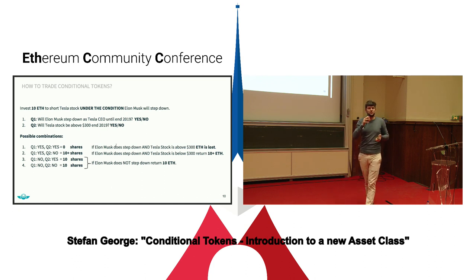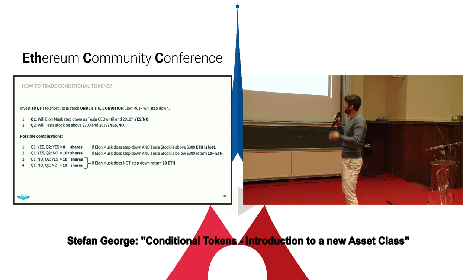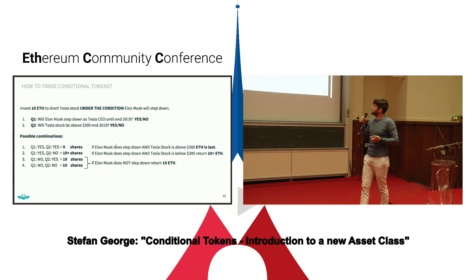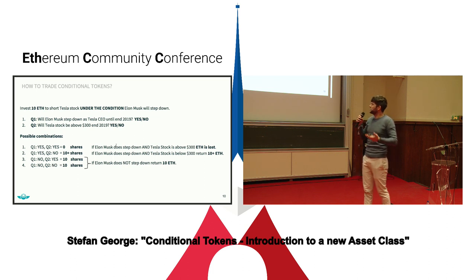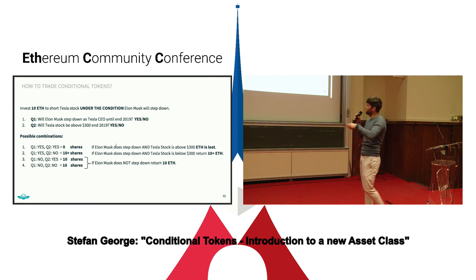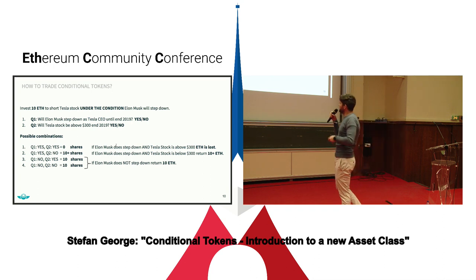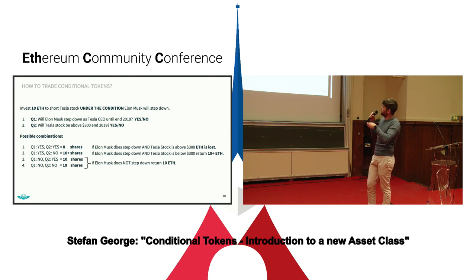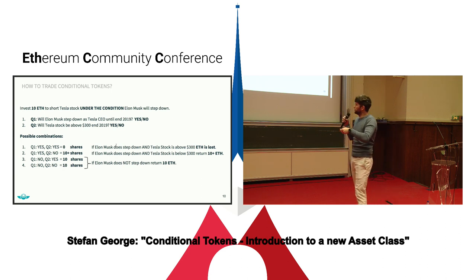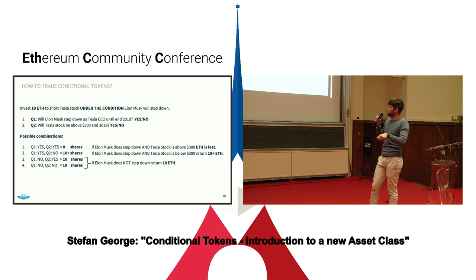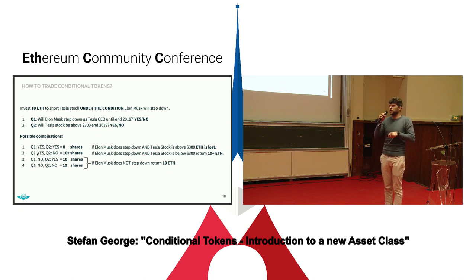This is a bit abstract, so let's look at a concrete trade on such a market. The same example: if you want to invest 10 ether to short Tesla under the condition that Elon Musk will step down — so we have two questions: will Elon Musk step down, and second, will Tesla stock be above $300? If we create all possible combinations we have four — two to the power of two. Now if we assume we only invest under the condition that Elon Musk will step down, then we have to hedge that Elon Musk will not step down. So all combinations three and four where Q1 results to no — there we just keep ten shares, so if Elon Musk does not step down we can always get our initial investment back.